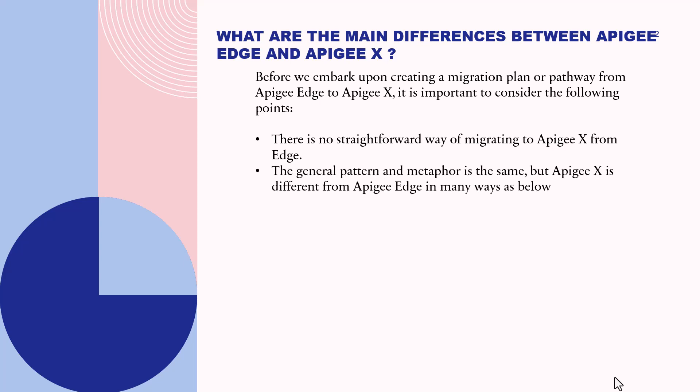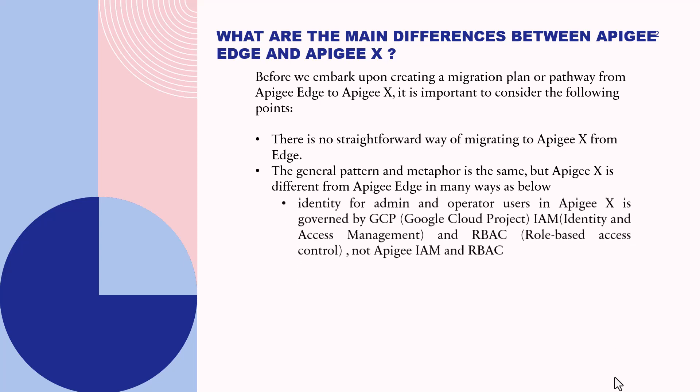The general pattern and metaphor is the same, but Apigee X is different from Apigee Edge in many ways. The identity for admin and operator users in Apigee X is governed by GCP — Google Cloud Project — Identity Access Management and Role-Based Access Control (RBAC), and not Apigee IAM and RBAC. This is the salient difference because Apigee Edge is not built on Google Cloud Project, whereas Apigee X clearly is, and you need a Google Cloud Project to configure it.